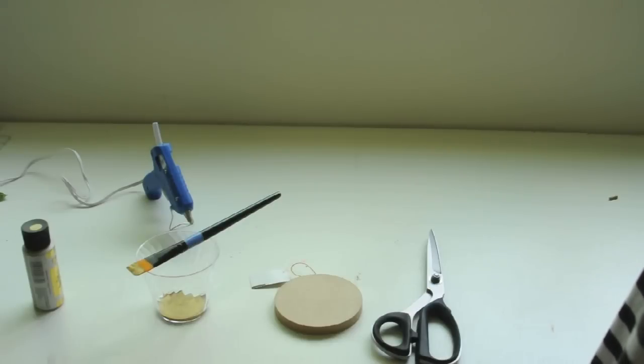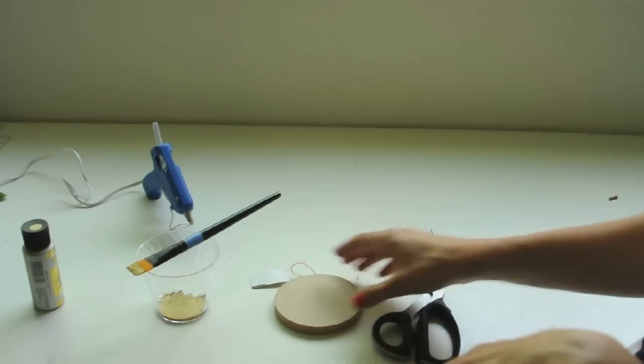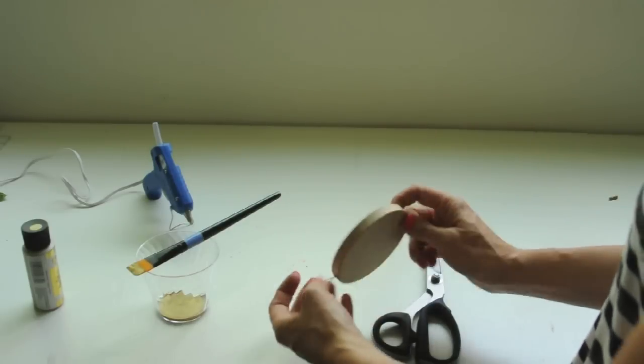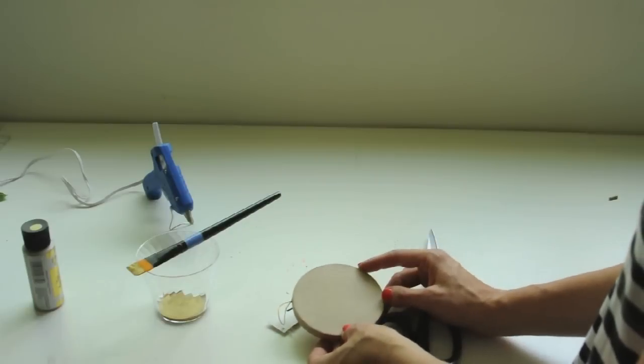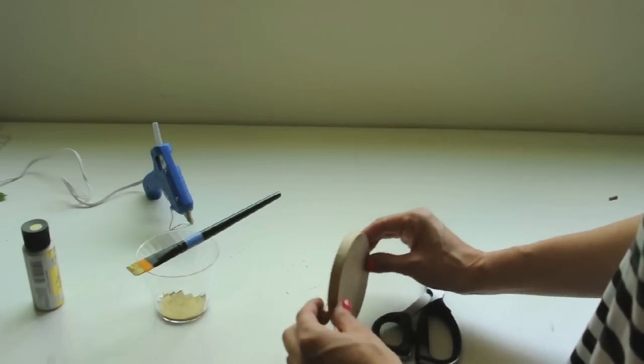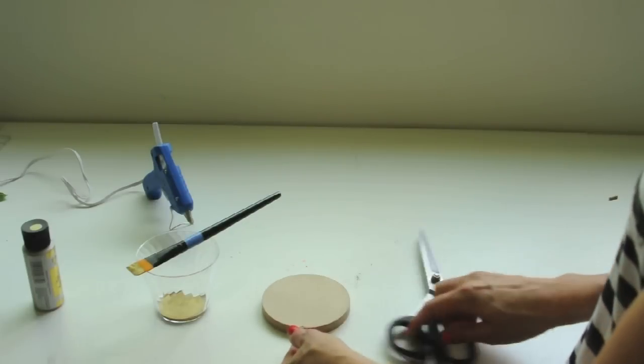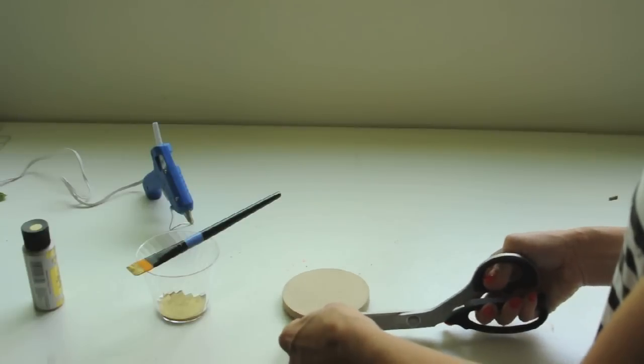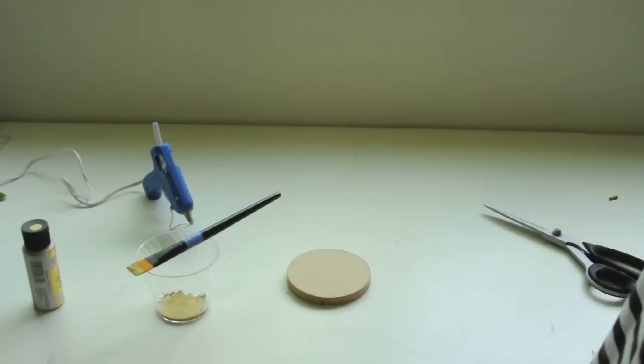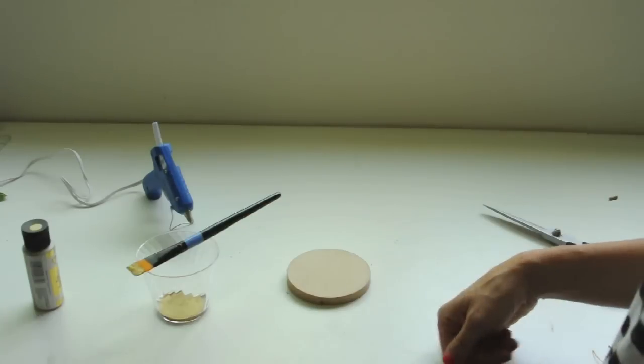I'm going to show you how I made gold medals for my kids. I found these little Christmas ornament blanks at the craft store at Michael's and I just bought a couple of them. I'm just going to cut off the ornament piece and then what I'm going to do is paint the whole thing gold.